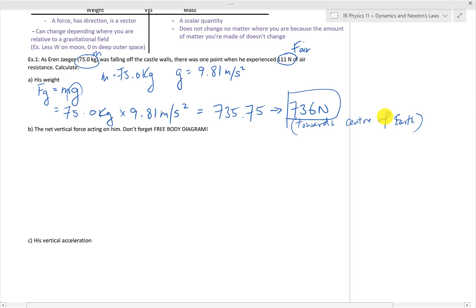Question B, the net vertical force acting on Aaron. And don't forget, we need to draw a free body diagram. Drawing him as an oval, we have the force due to gravity acting on him.